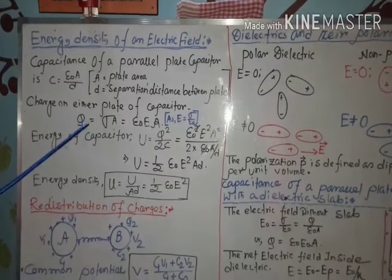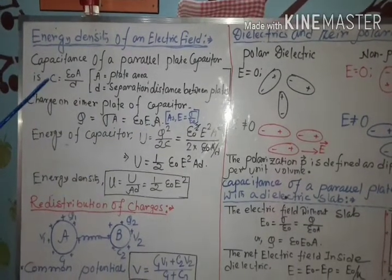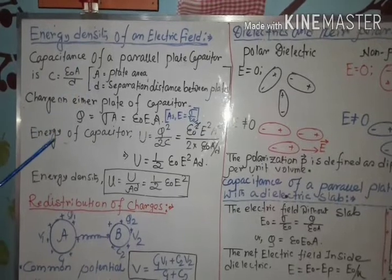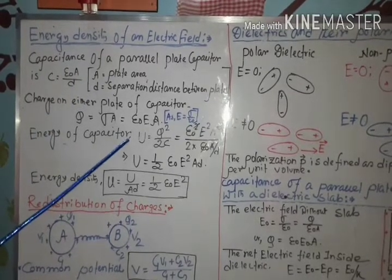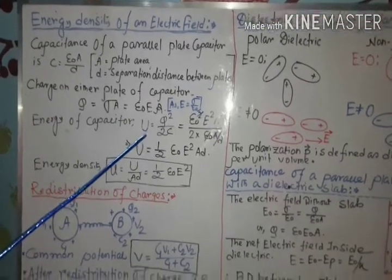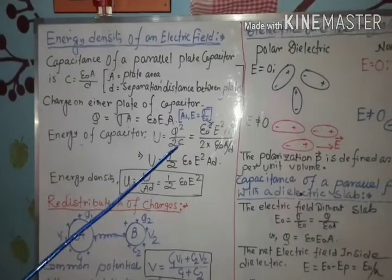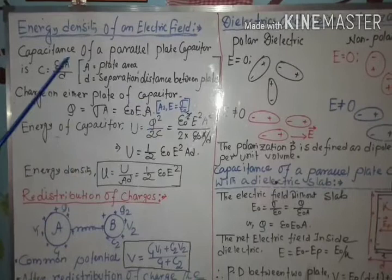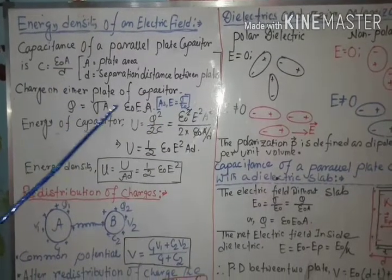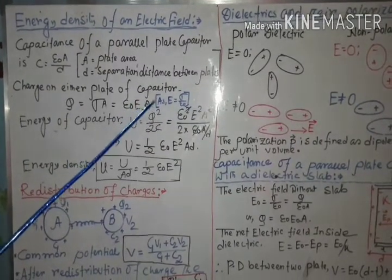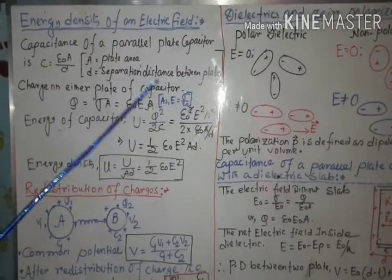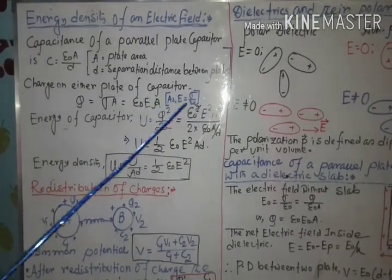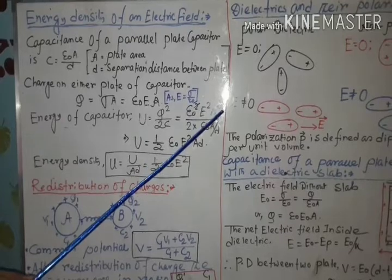Now you know the expression for Q and the expression for C. Therefore, the energy of the capacitor according to the formula U equals Q squared by 2C. The value of Q is epsilon naught E A, so Q squared equals epsilon naught squared E squared A squared.